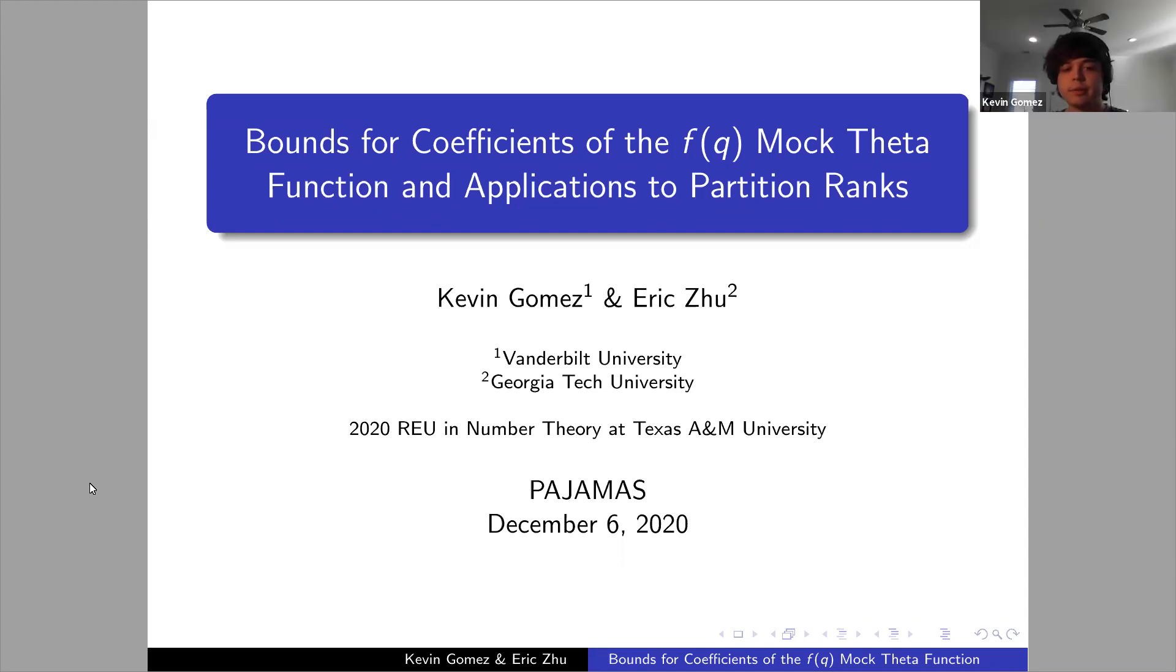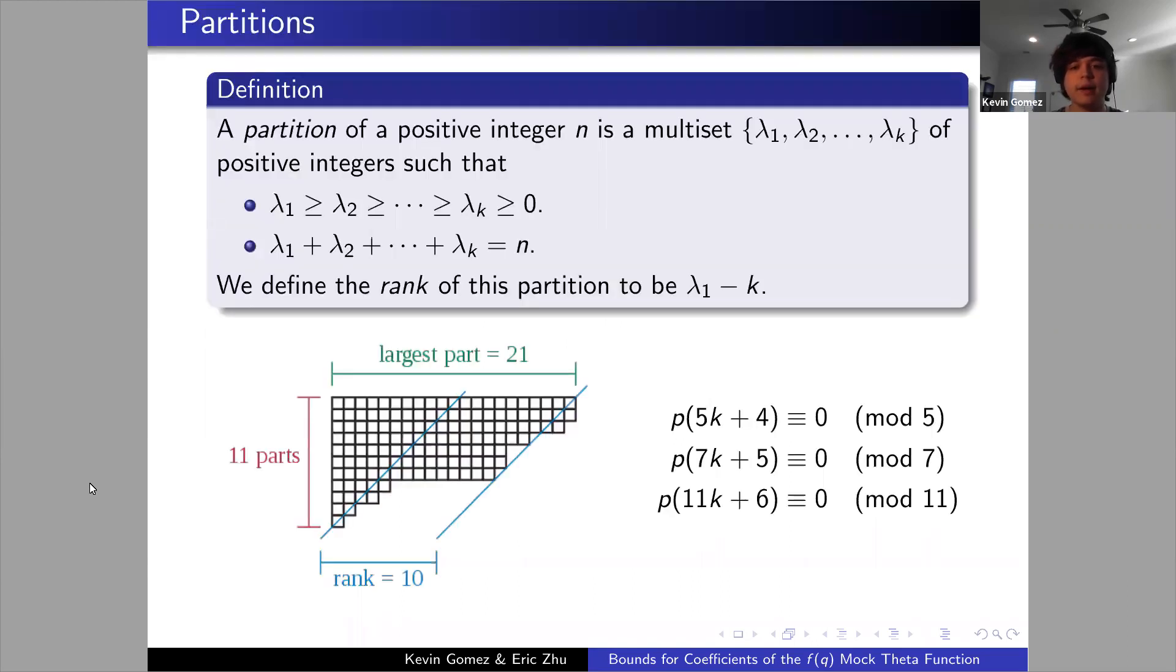Thank you Professor Thorne. As you said, my name is Kevin Gomez, I'm a third year undergraduate student at Vanderbilt University. This work was completed jointly with Eric Zhu, who is currently a fourth year undergraduate student at Georgia Tech University, at the 2020 REU in Number Theory at Texas A&M University over the summer. I'll be speaking about the results we obtained from that.